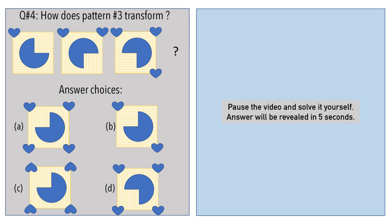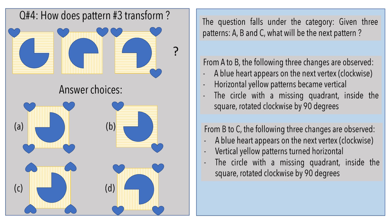Question number 4: find the missing pattern in the series. Pause the video and frame your answer. From A to B, a blue heart-shaped object appears on the next adjacent vertex in clockwise direction. The yellow horizontal lines in pattern A turned vertical in pattern B, and the circle with a missing piece rotated 90 degrees.